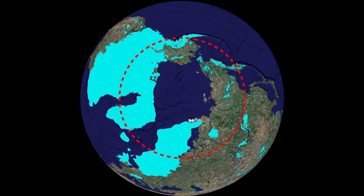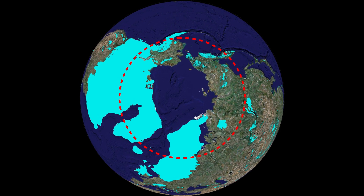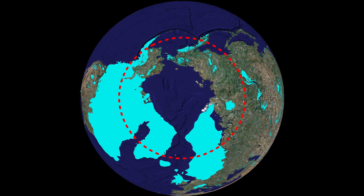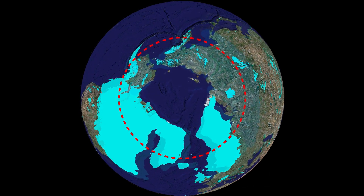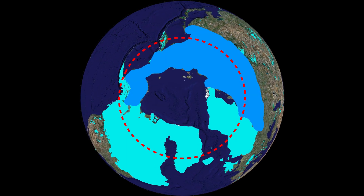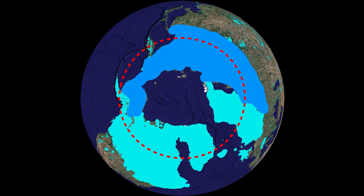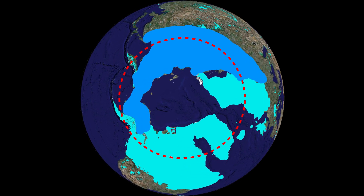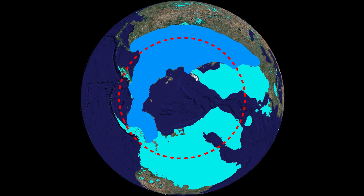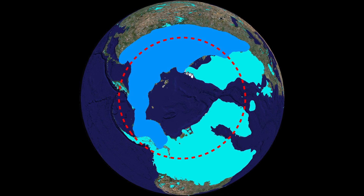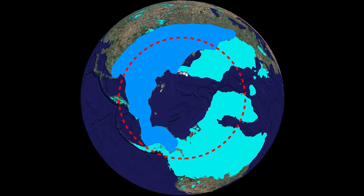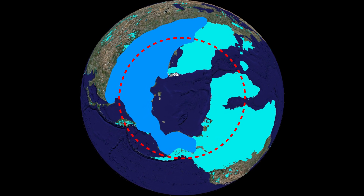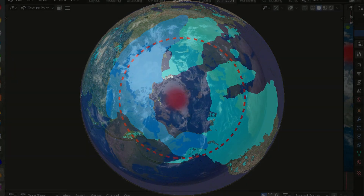Consider the simple question: why was the northern part of Russia not entirely covered by a large ice sheet? The vast land mass of Russia encourages the formation of ice sheets, and there are also big mountain ranges there. So if there was a large ice sheet on North America and a large ice sheet on Europe, why not one on Russia? The explanation is very simple — the spin axis has enormously changed.